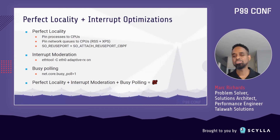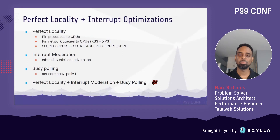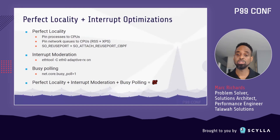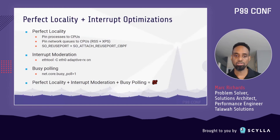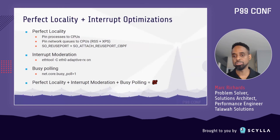So now we've streamlined where the data is getting processed. We're going to take a look at streamlining when the data gets processed using interrupt moderation and busy polling. Whenever a packet arrives over the network, the network card triggers a hardware interrupt, which interrupts whatever the operating system was doing.